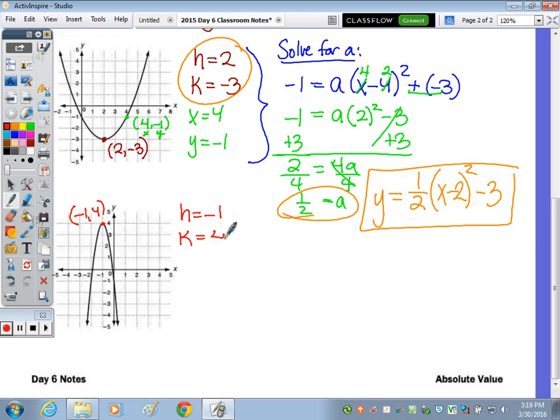Same process, next one. So the vertex here is negative 1, 4. So h is negative 1, k is 4. And the point on the curve that I'm going to use, let's do 0, negative 1. So that means x is 0, y is negative 1.